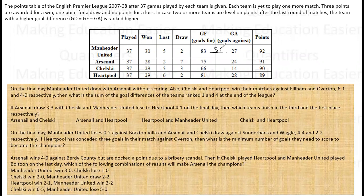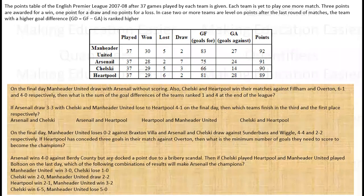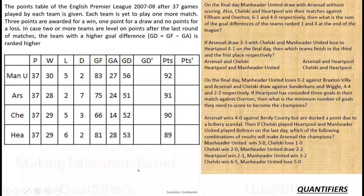The current goal differences are 56, 51, 52, and 53. These are the points right now, and there will be some new points after the final match. I'll tabulate it and fetch whatever the question has given to us. So this is the table given to us — goal differences are 56, 51, 52, and 53 currently.